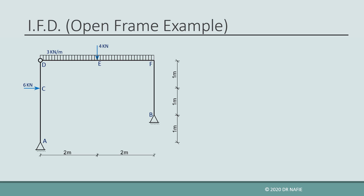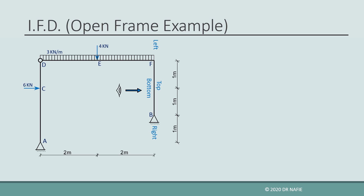Another important issue when drawing internal force diagrams of frames has to do with the way we look at the frame elements. For horizontal elements, we always look at the element from the bottom, and therefore the left and right directions are easily identified as shown. For vertical elements, the direction of sight is not always unique. Take the vertical element BF as an example. If we look at the element from the inside, the bottom of the element will be on the inside, the left direction will be at the upper end, and the right direction will be at the lower end.